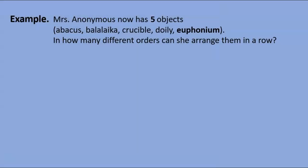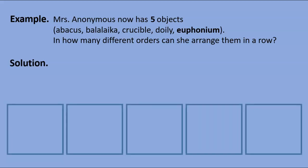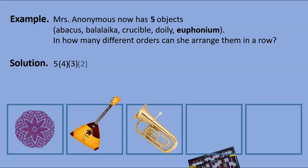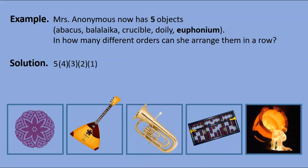Now Mrs. Anonymous has five objects: an abacus, a balalaika, a crucible, a doily, and a euphonium. In how many different orders can she arrange them? We imagine five slots. There are five options for the first slot — let's put the doily there. Four options for the next — let's put the balalaika there. For the remaining slots there are three, two, and one options respectively. By the sandwich rule, there are one hundred and twenty orders altogether.